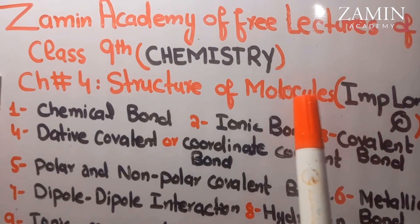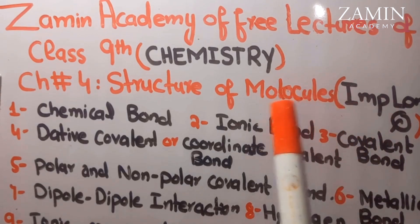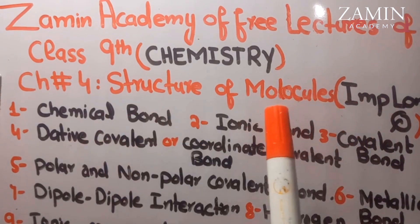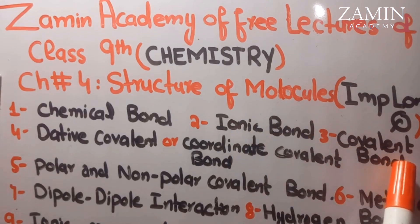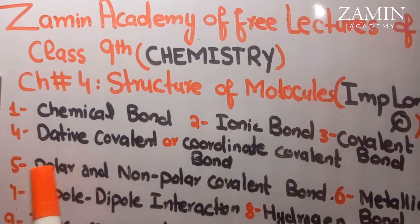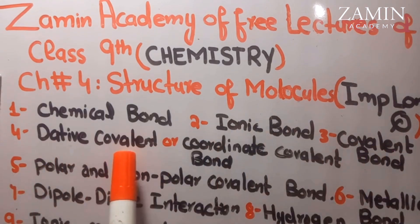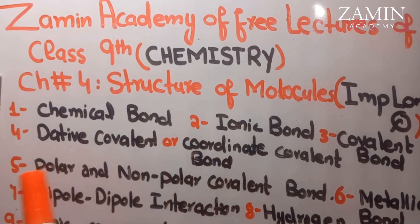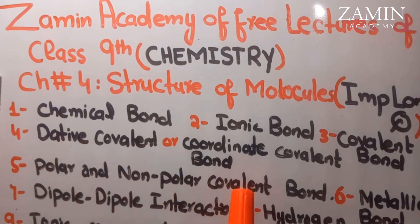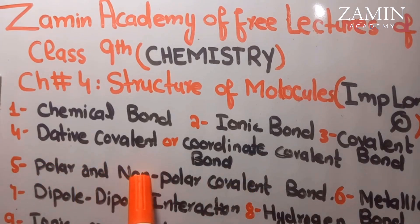The second long question is chemical bonds type ionic bonds. The third long question is covalent bonds, and the fourth one is coordinate covalent bonds. The fifth long question is polar and non-polar covalent bonds — they can also ask the difference.